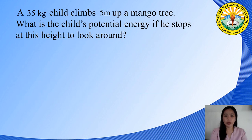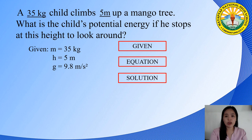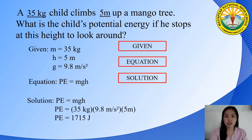Let's solve this word problem: a 35-kilogram child climbs 5 meters up a mango tree. What is the child's potential energy if he stops at this height to look around? Identify the given: mass = 35 kg, height = 5 m, and g = 9.8 m/s². The equation is PE = m × g × h. Substituting the values, the child's potential energy is 1,715 Joules.